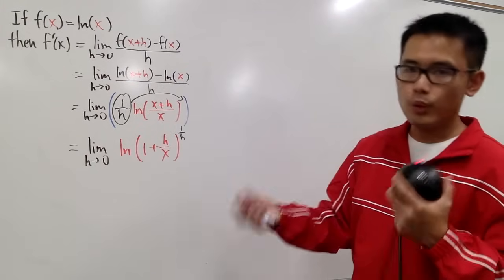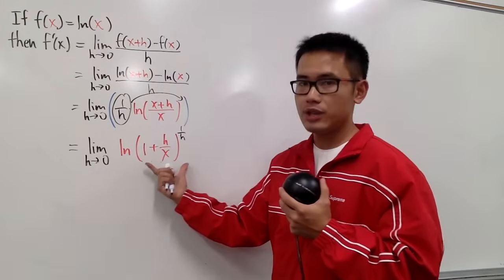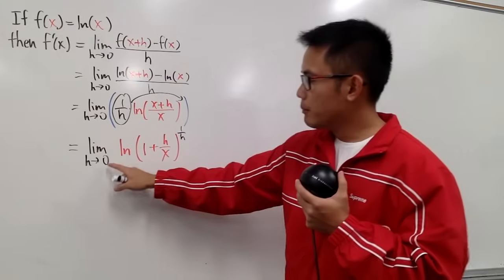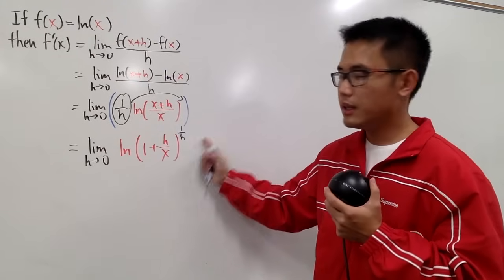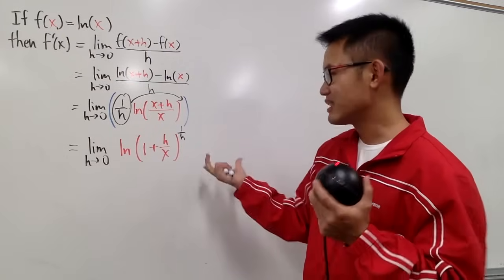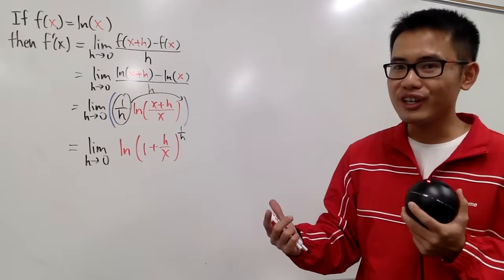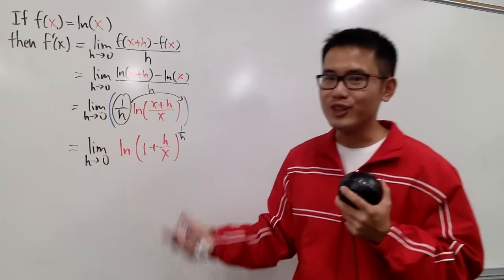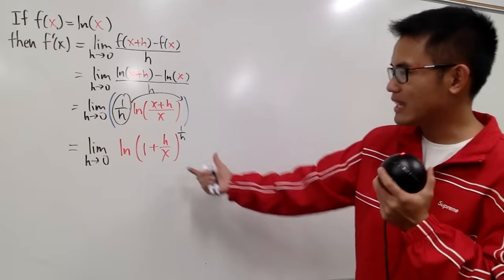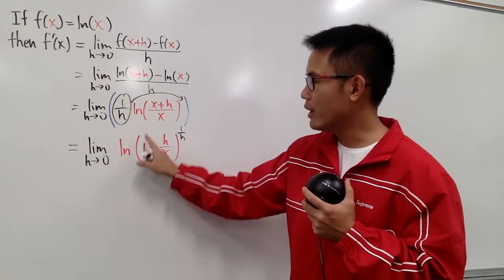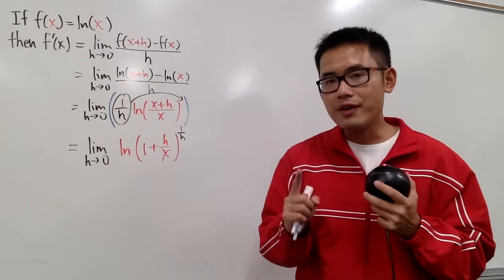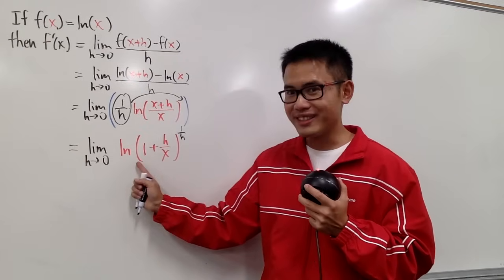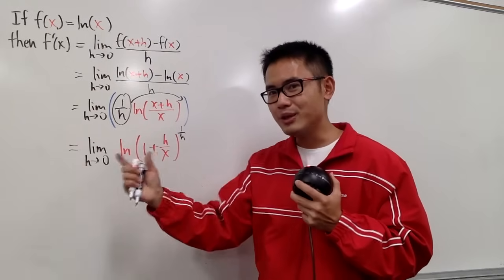If we plug in 0, we get (1+0/x)^(1/0) = 1^∞, which is indeterminate — we have to do more work. But this part also reminds us of the definition of e. And because ln is a continuous function, the limit of a continuous function equals that continuous function of the limit.